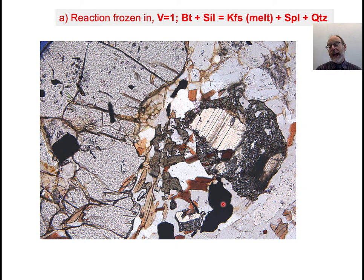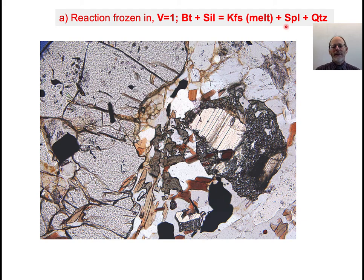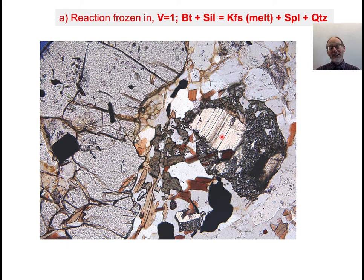One possibility is that there's a reaction that has just been frozen in. If you have four phases, they could be related by a reaction: biotite plus sillimanite goes to K-feldspar plus spinel. K-feldspar is present. So these three minerals — biotite, spinel, and sillimanite — are not in equilibrium with each other. If they're not at equilibrium, they could coexist. The AFM question is how could you have four phases at equilibrium? One answer is they're not at equilibrium.